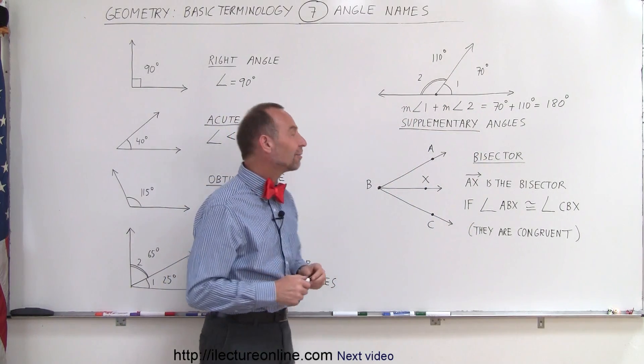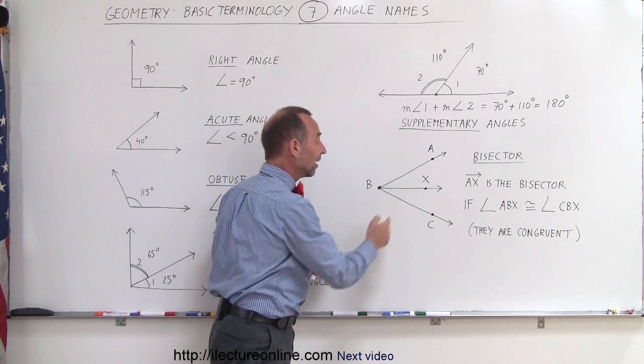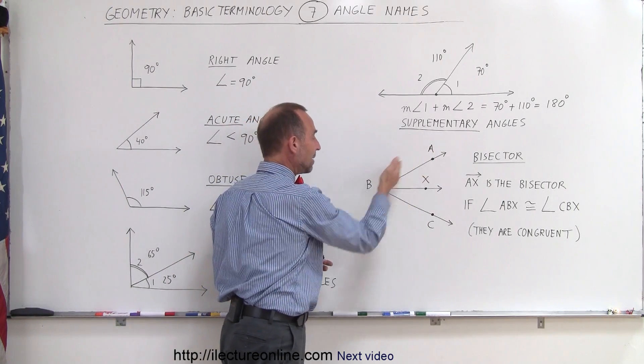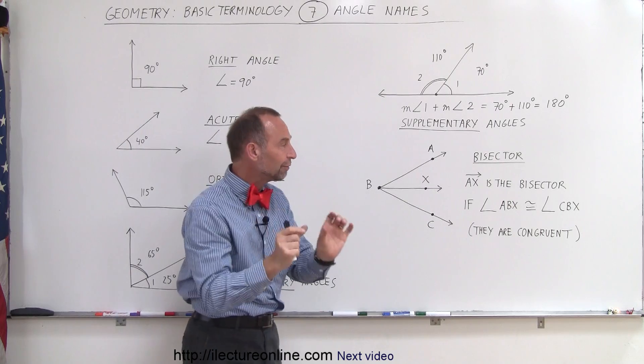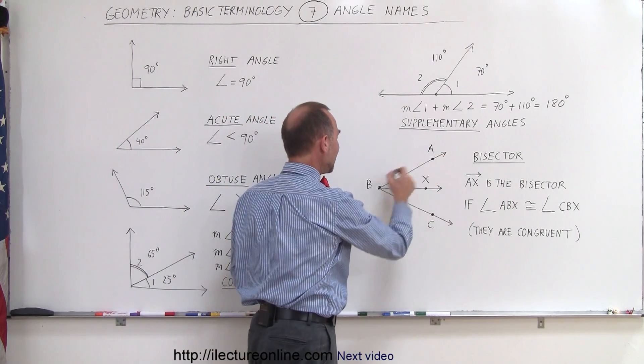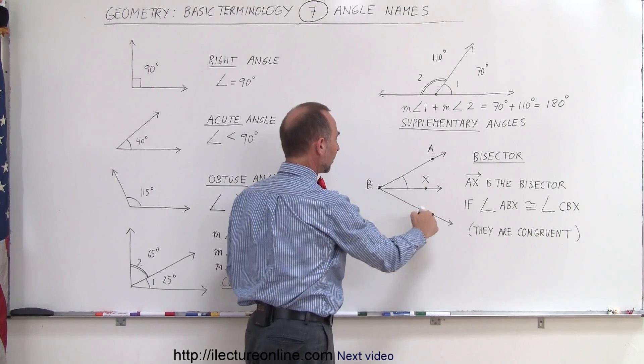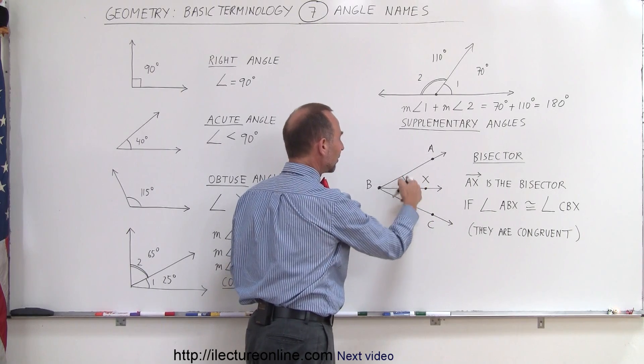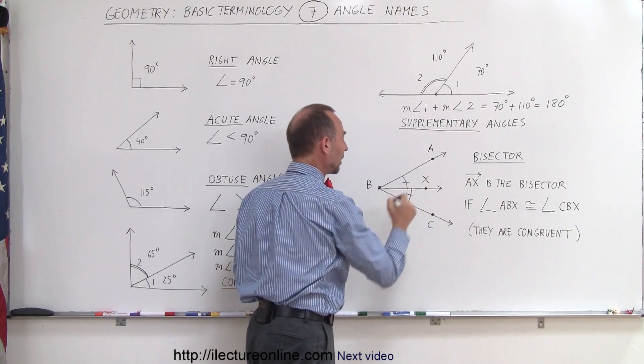And finally, we have the bisector. A bisector is a ray from B to X that divides the existing angle ABC into two equivalent angles that have the exact same measure. For example, angle ABX right here and angle CBX right here. They're the exact same measure. That's how we indicate that.